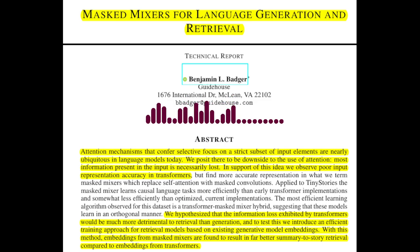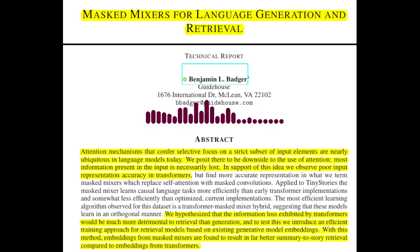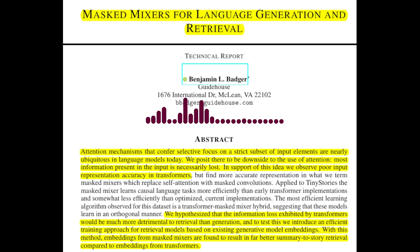Masked mixers offer a promising alternative. The paper also explores efficiency: masked mixers are more efficient learners than early transformer implementations like GPT. This suggests that masked mixers, despite being a newer architecture, can achieve comparable or even better performance with less computational resources.